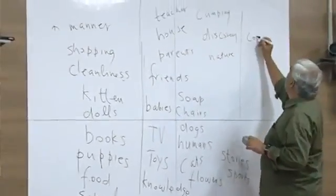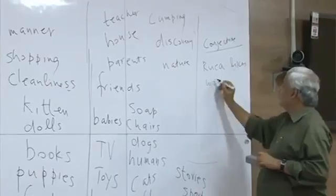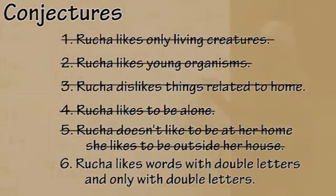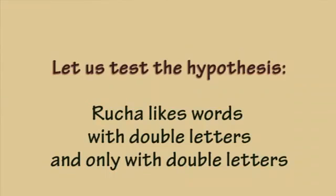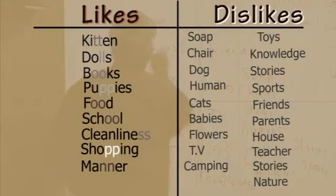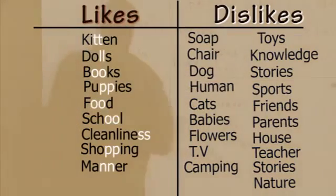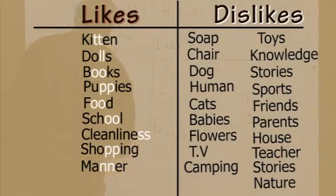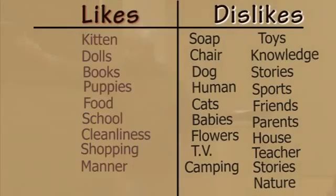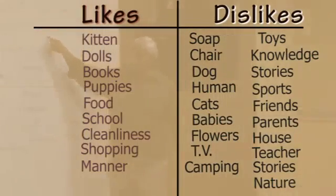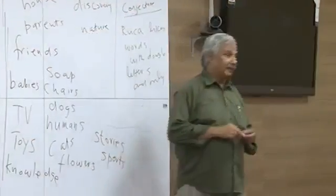So let's try. You change your assumption — you realize it is about words. The conjecture is: Rucha likes words with double letters, and only words with double letters. Is that right? Test the hypothesis. Let's see: Shopping — what are the double letters? Cleanliness — all right. Puppies. Food. School. So that works for the likes. What about the dislikes — any double letters anywhere there? No. So your principle is correct.